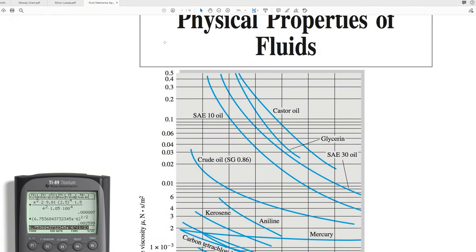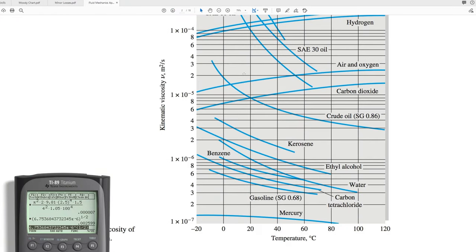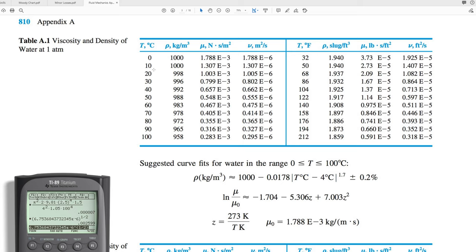For that, I will go into table A1. Water at 20 degrees Celsius has a kinematic viscosity of 1.005 times 10 to the negative sixth.